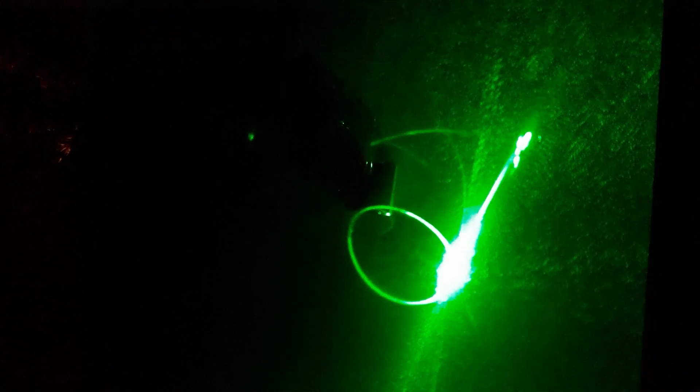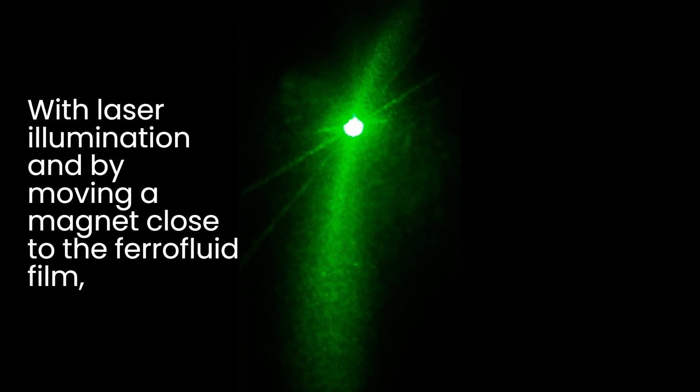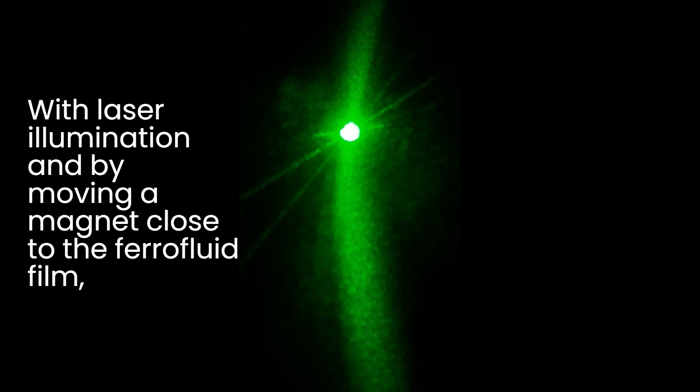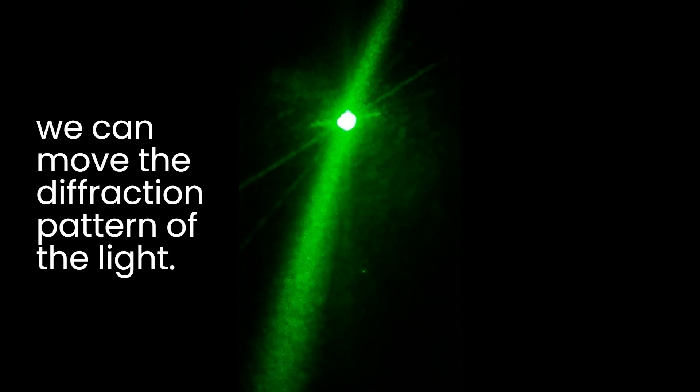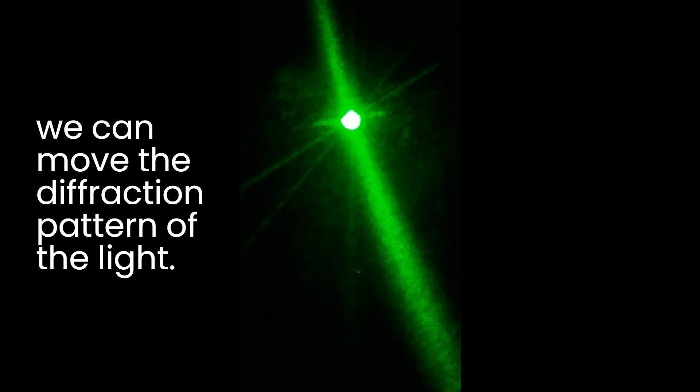Now we are analyzing the details of the whip-like motion that occurs in the sky, reproducing this type of movement in the luminous pattern produced by the ferrofluid film. With laser illumination and by moving a magnet close to the ferrofluid film, we can move the diffraction pattern of the light.